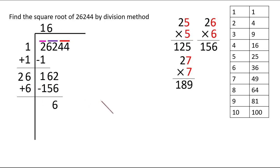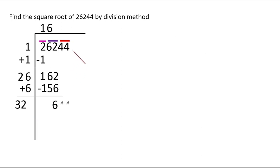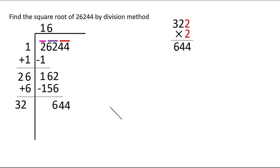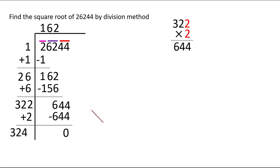We add 6 down to get 32, leaving space for another digit. Bring 44 down. We need a digit after 32 such that multiplying by the same digit gives 644 or less. 321×1 = 321, which is very less than 644. 322×2 = 644 exactly. Writing 2 above and below: 322×2 = 644, remainder 0. The end of finding the square root gives us the answer 162. The square root of 26244 is 162.